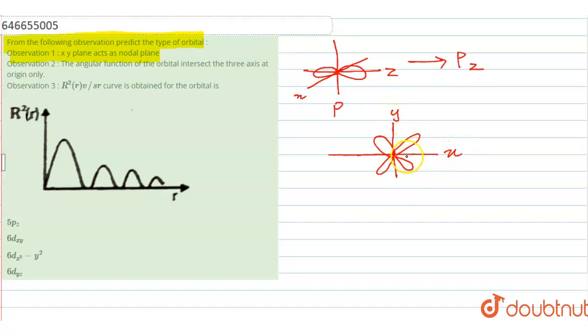So the x and y are involved in the dumbbells, that is the node. So xy will automatically not be a correct option because the xy plane does not act as a nodal plane.